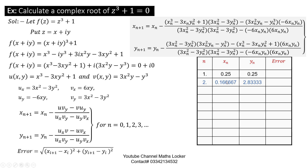Substituting these values into the formula, check the results. If you do not want to use the error formula, you can stop the loop when the value of x_n and y_n remain the same or nearly the same — within a tolerance of 0.001 difference.